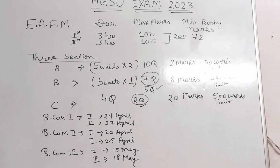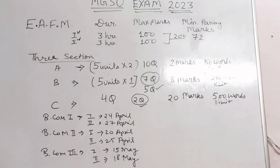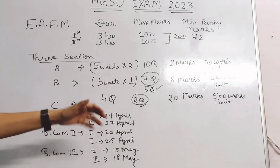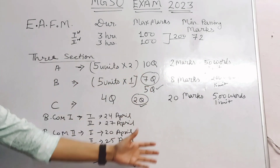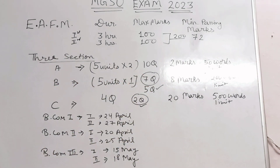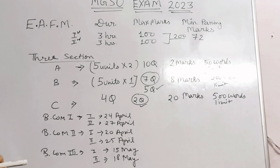In Section C, there will be 4 questions but you only have to attempt 2 questions. Each answer will be 200 words. For both Section B and Section C, you have to prepare all the units, but you can work in a smart way.